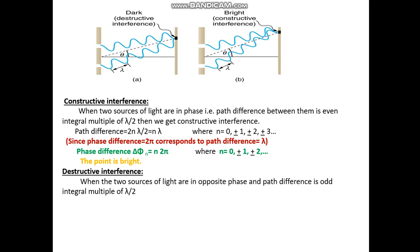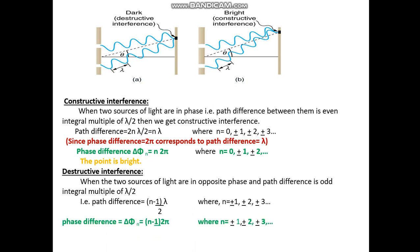Destructive interference occurs when the two sources of light are in opposite phase and the path difference is an odd integral multiple of lambda by 2. The path difference equals n minus half times lambda, where n equals plus or minus 1, plus or minus 2, plus or minus 3. The phase difference delta phi equals n minus half times 2pi, where n equals plus or minus 1, plus or minus 2, plus or minus 3, and so on. The point is dark.